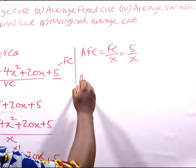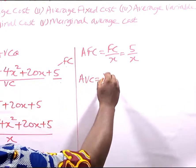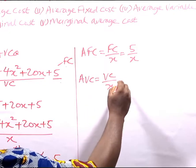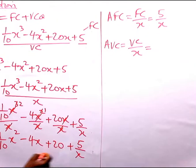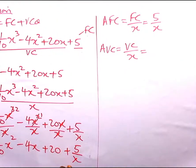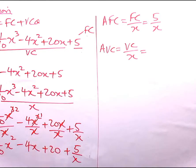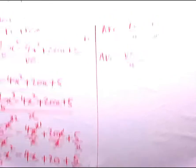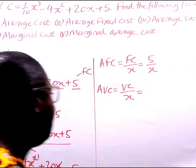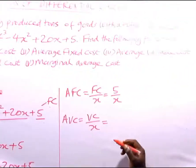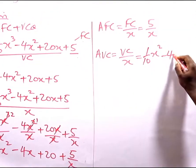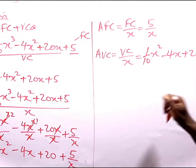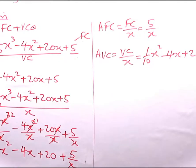Now the average variable cost will be variable cost divided by X. We already have it here — please look at the board. The average variable cost is the portion of our average cost excluding the fixed cost term 5/X. So the average variable cost is (1/10)X² - 4X + 20.